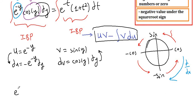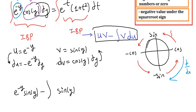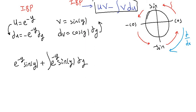Applying u times v minus integral of v du: we get e^(-y) times sine y, minus the integral of v du, where v is sine y and du is negative e^(-y) dy. Pulling the negative sign out makes it positive, giving plus the integral of sine y times e^(-y) dy.